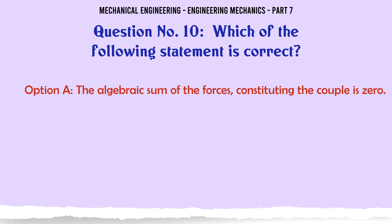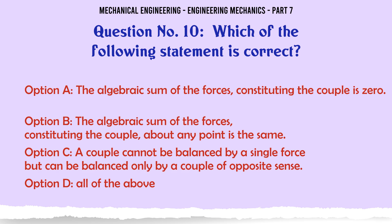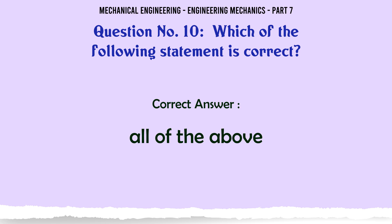Which of the following statement is correct? Option A: The algebraic sum of the forces constituting the couple is zero. Option B: The algebraic sum of the forces constituting the couple about any point is the same. Option C: A couple cannot be balanced by a single force but can be balanced only by a couple of opposite sense. Option D: All of the above. The correct answer is All of the above.